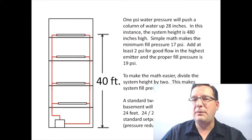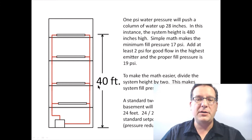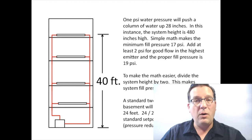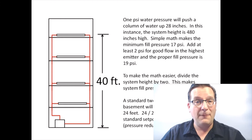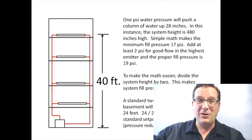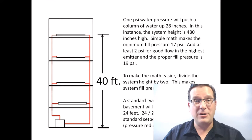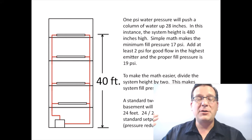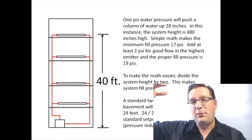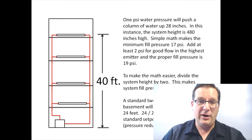I like to make the math easy: just take your system height in feet and divide by two. Because 28 inches is really close to 24 inches, which is two feet, it's much easier to do the math that way. 40 feet tall divided by two equals 20 PSI cold fill pressure. That's enough to fill to the top plus the little extra needed to make sure you're still pressurized at the highest emitter.